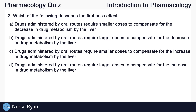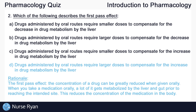Moving on to question number two: Which of the following describes the first pass effect? This one is definitely a little bit more difficult. The first pass effect describes the fact that the concentration of a drug can be greatly reduced when given by the oral route. This is because when you take a medication orally, a lot of it gets metabolized by the liver and gut prior to reaching the intended site, reducing the concentration of the medication in the body. So because of the first pass effect, the answer is D — drugs administered by oral routes require larger doses to compensate for the increase in drug metabolism by the liver.